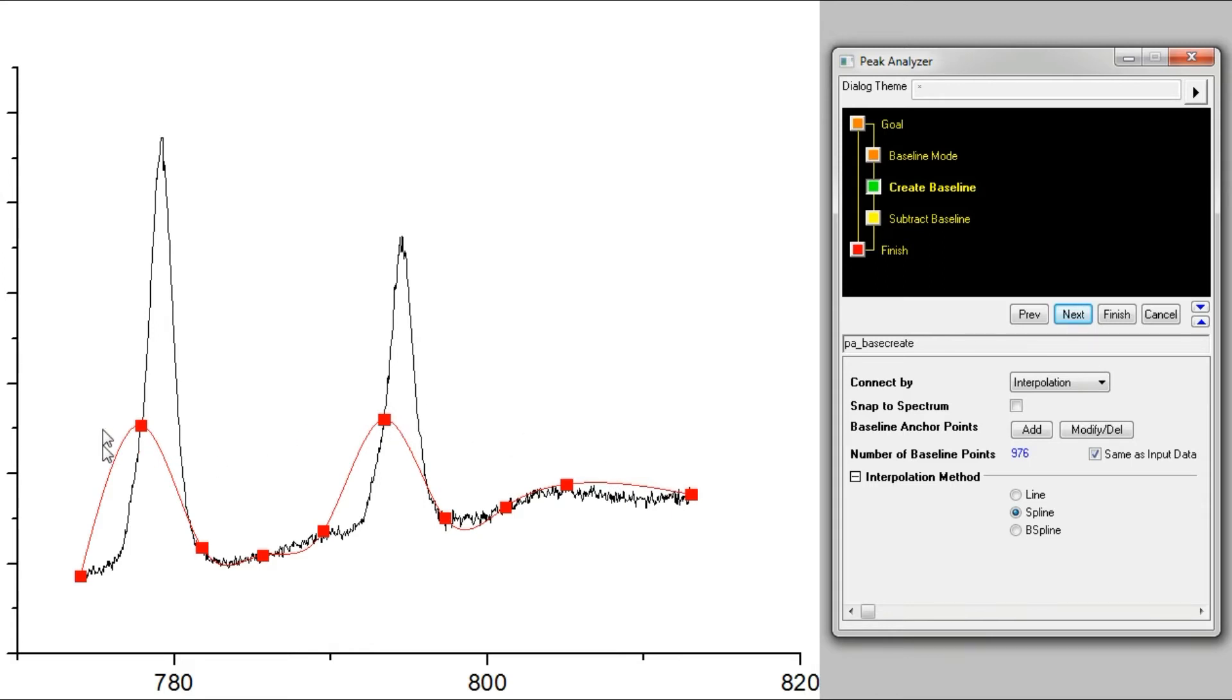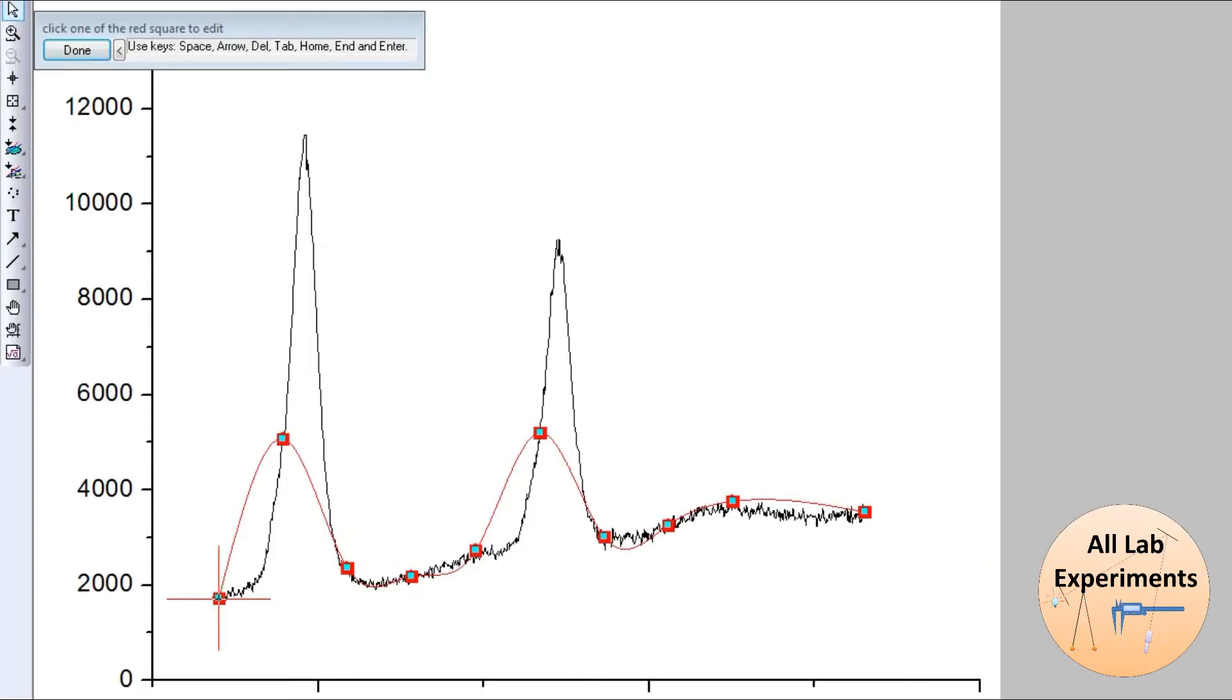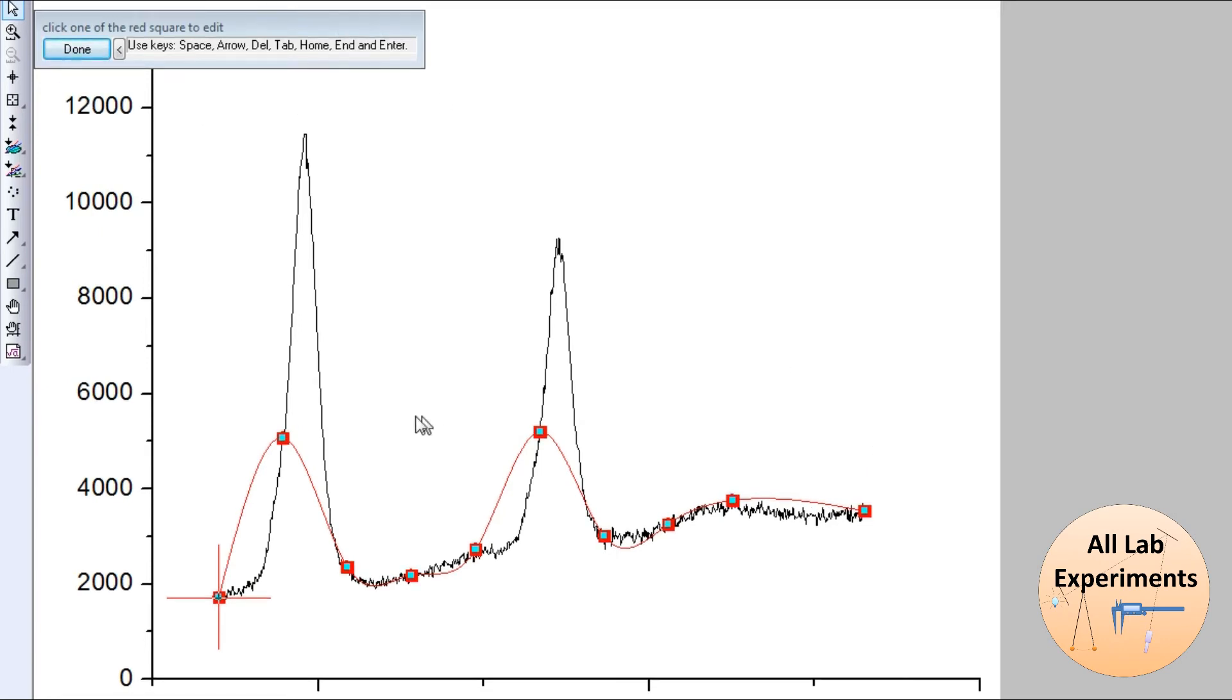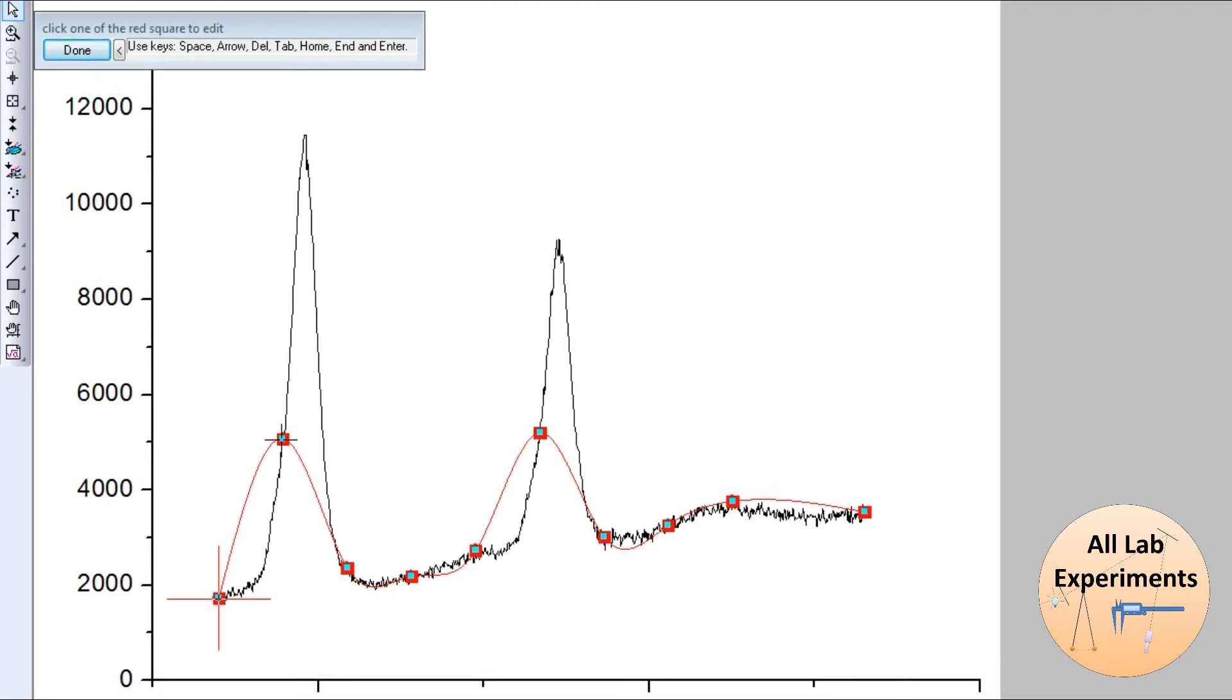Now what we will do, we will press this point modify or delete. When I press this one, a dialog box will open and with this I get the freedom to set these points to the required place. In this case I can pick this point and place it somewhere around here. I can pick this point and place it somewhere around here.